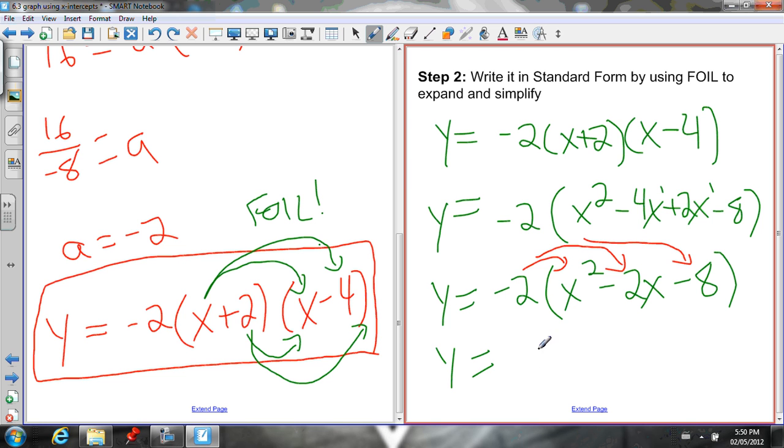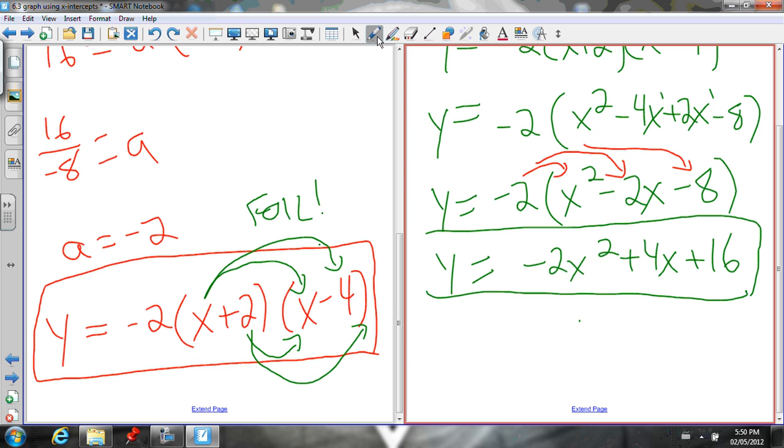I can go ahead and do that. Negative 2 times x squared is negative 2x squared. Negative 2 times negative 2x is positive 4x. Negative 2 times negative 8 is positive 16. And there we go. There's our final answer. This is a quadratic in standard form. We have y equals an a value. Our a value is negative 2x squared plus a bx. Our b is 4 plus a c. Our c is 16. So, this is standard form. We've done what we set out to accomplish.